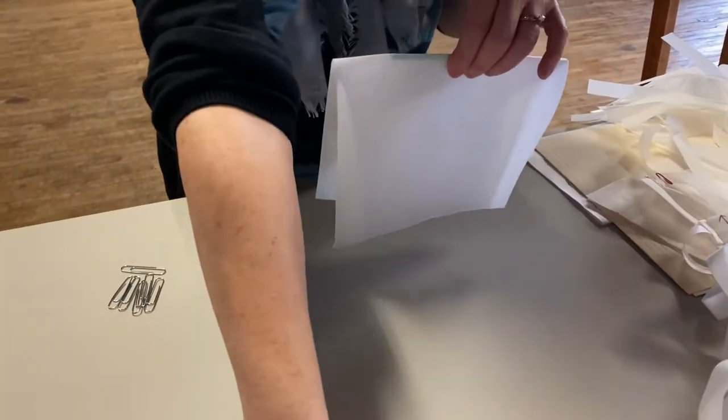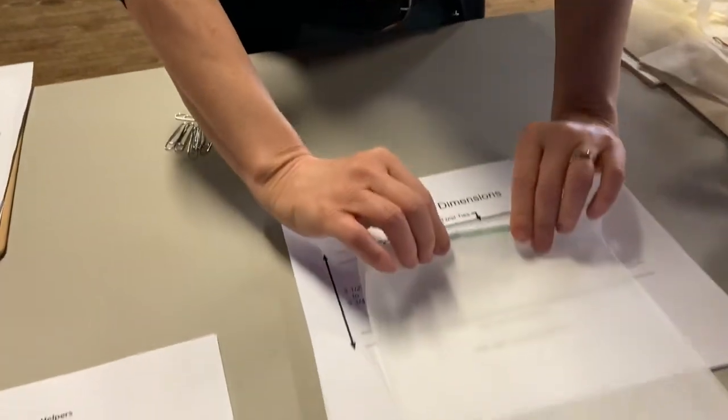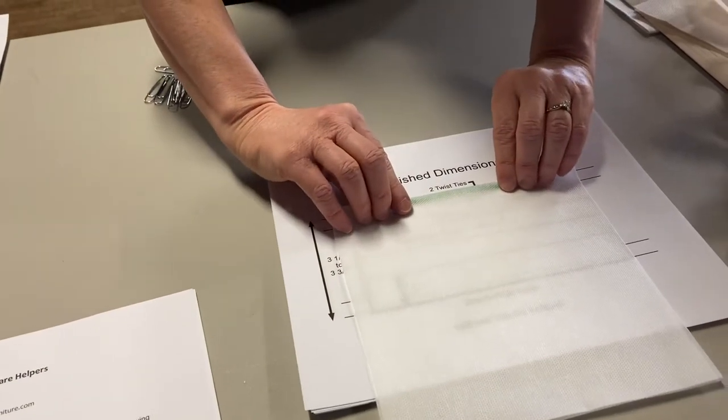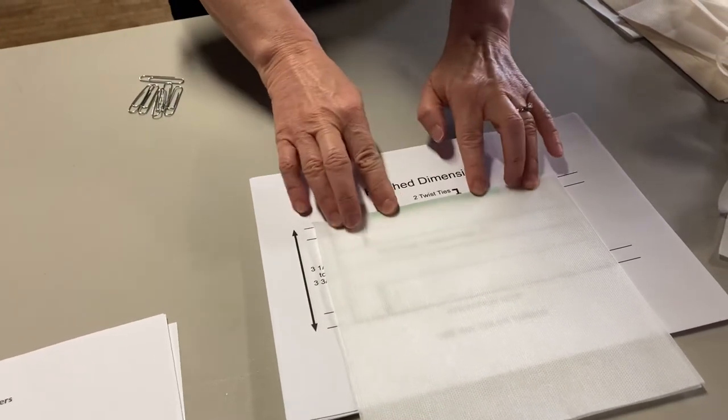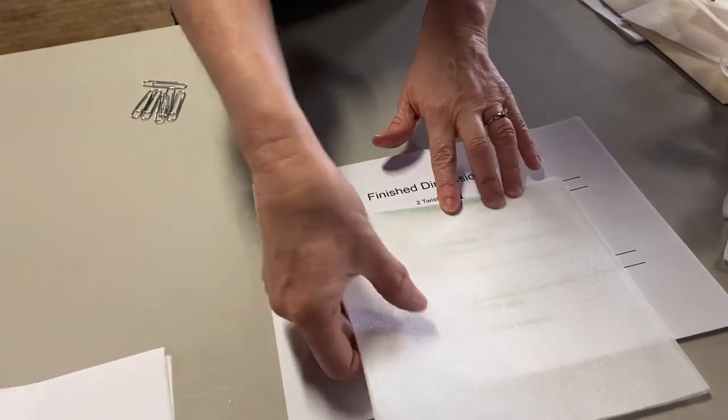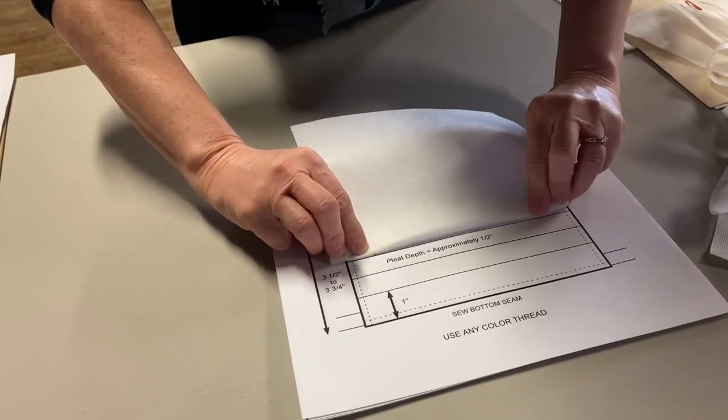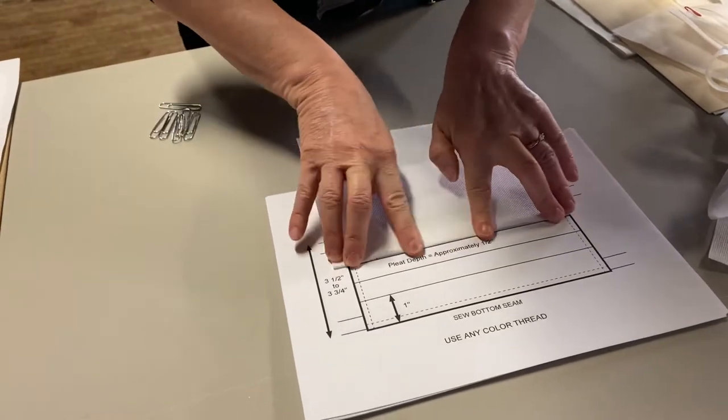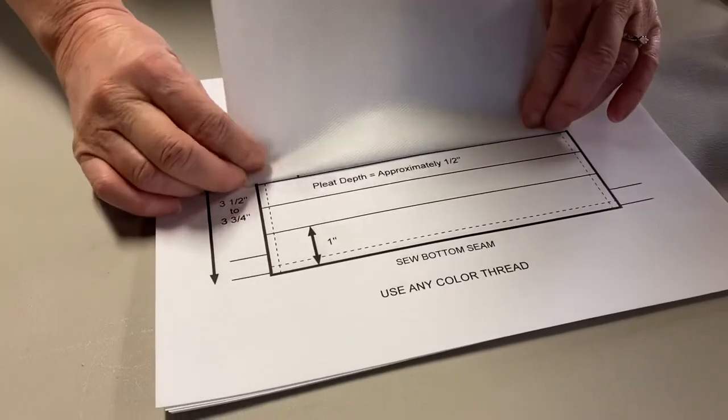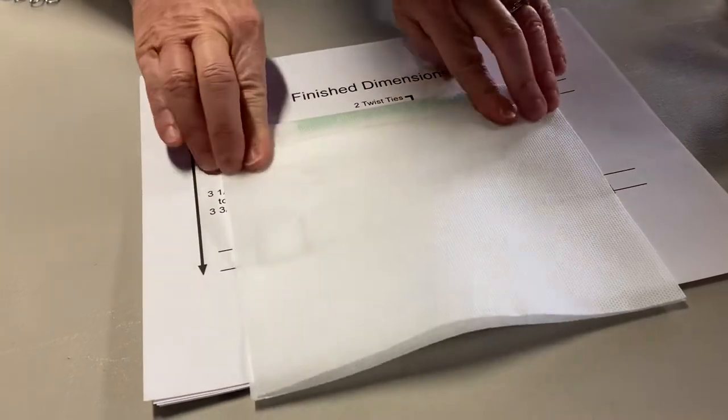Once you've done that, take your mask pattern, lay it in front of you. I do it upside down so that I can get the fold right. I lay the top where the nose piece is, right on top of the edge of the pattern, and then I fold it to the very first line so that I have my first inch and a quarter. Then I fold it down about a half an inch to make that first pleat, finger press it down.